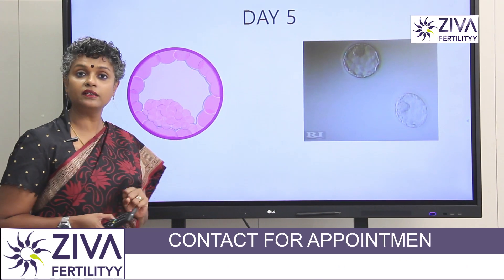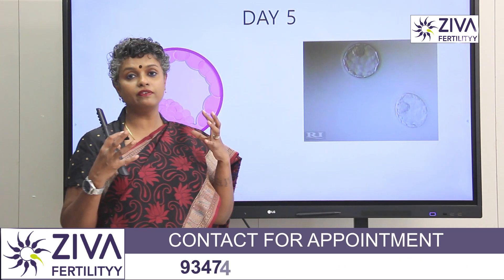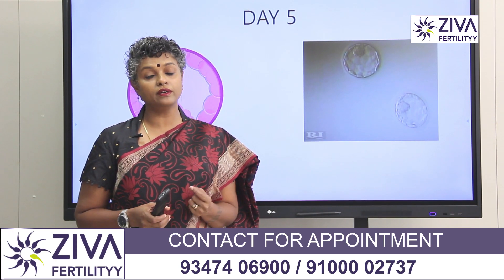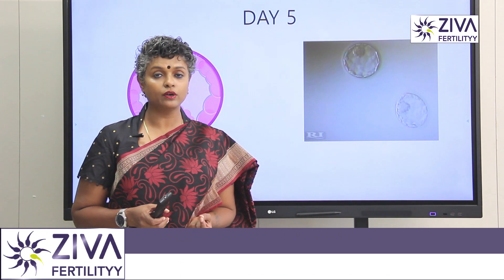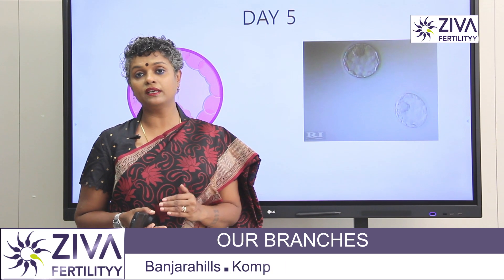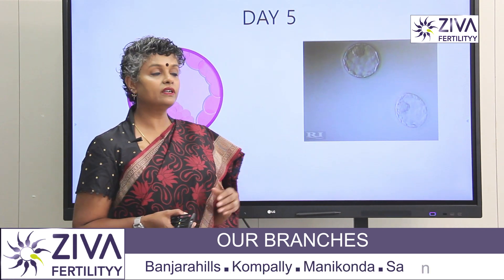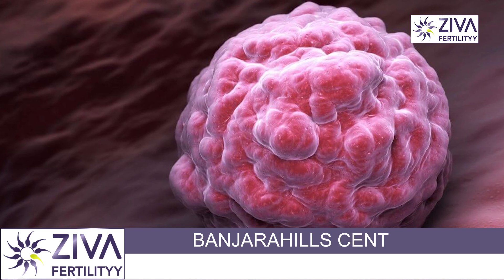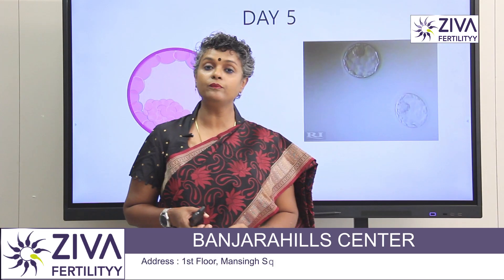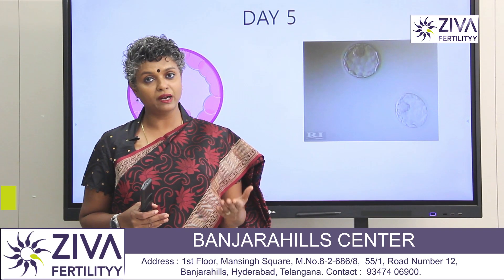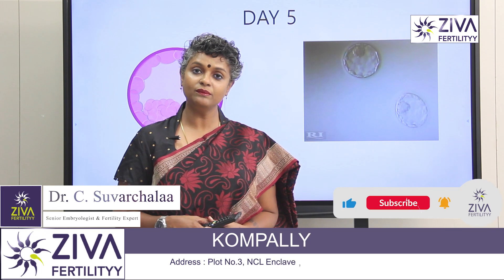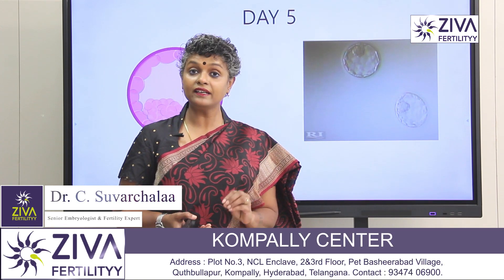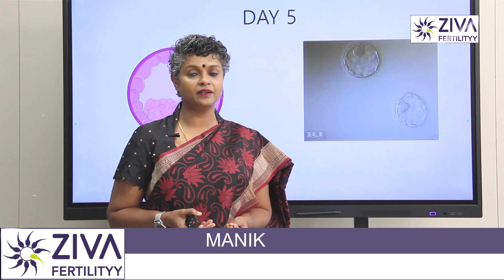At this stage we grade the blastocyst according to the inner cell mass and the trophectoderm. The center part you see is filled with fluid. It is very critical for embryologists in the IVF laboratory to grade this stage carefully. If it is nicely expanded — with very good inner cell mass and trophectoderm — it has a greater chance of implanting in the uterus and bringing about a pregnancy. This is how we grade embryos and select which ones will give us a better pregnancy rate.